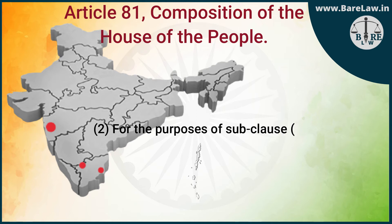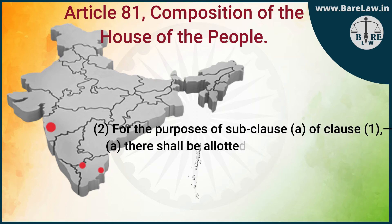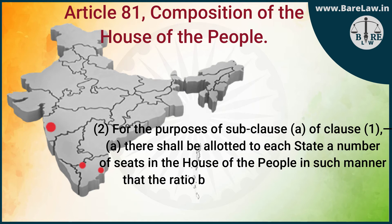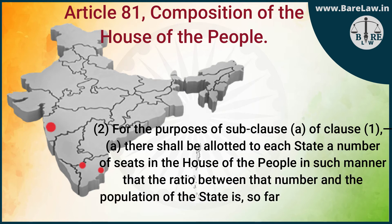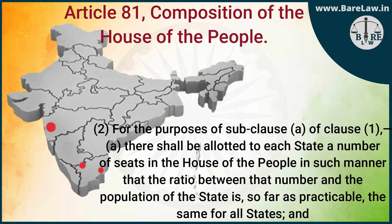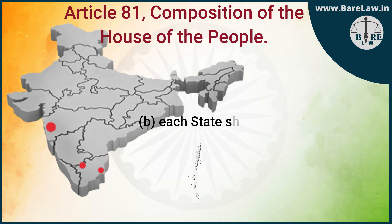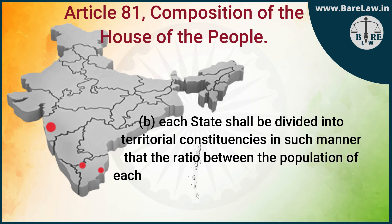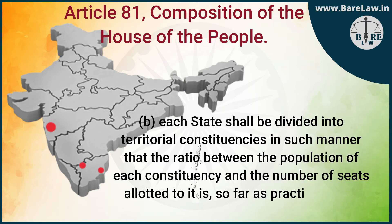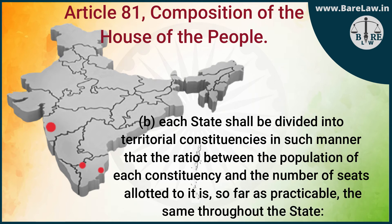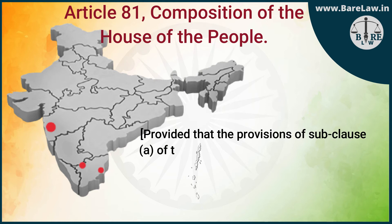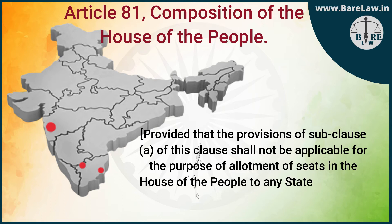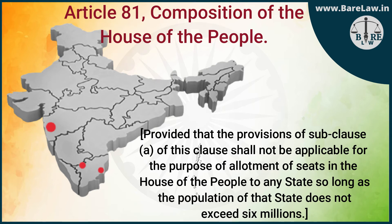Sub-Clause (2): For the purposes of Sub-Clause (a) of Clause (1) — (a) there shall be allotted to each State a number of seats in the House of the People in such manner that the ratio between that number and the population of the State is, so far as practicable, the same for all States; and (b) each State shall be divided into territorial constituencies in such manner that the ratio between the population of each constituency and the number of seats allotted to it is, so far as practicable, the same throughout the State; provided that Sub-Clause (a) shall not apply to any State so long as the population of that State does not exceed six millions.